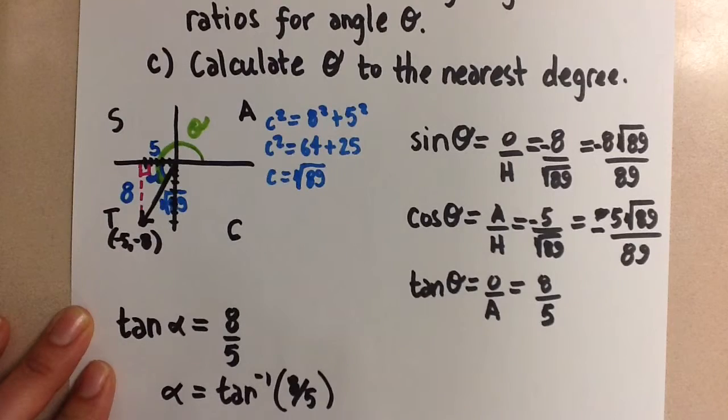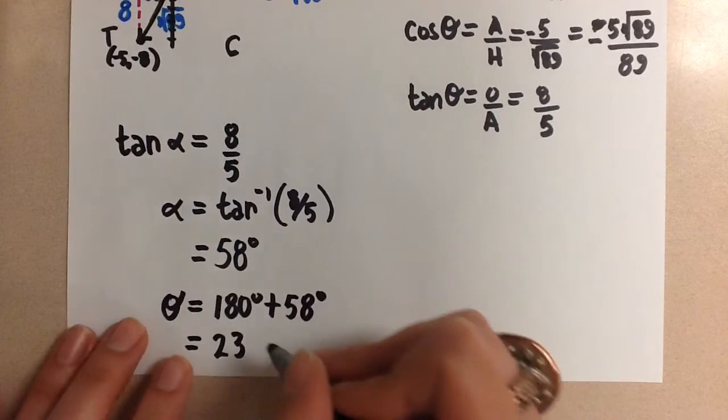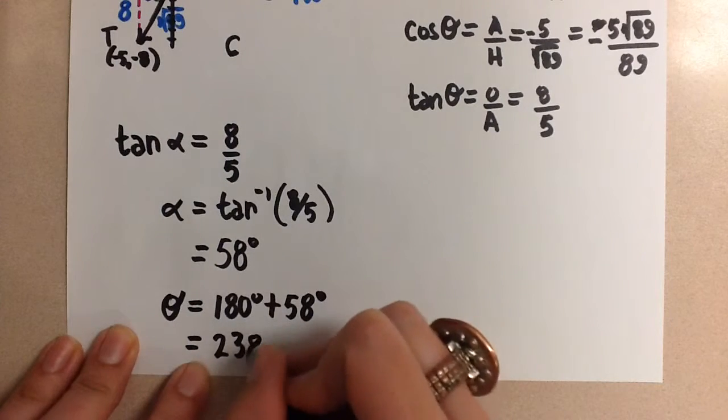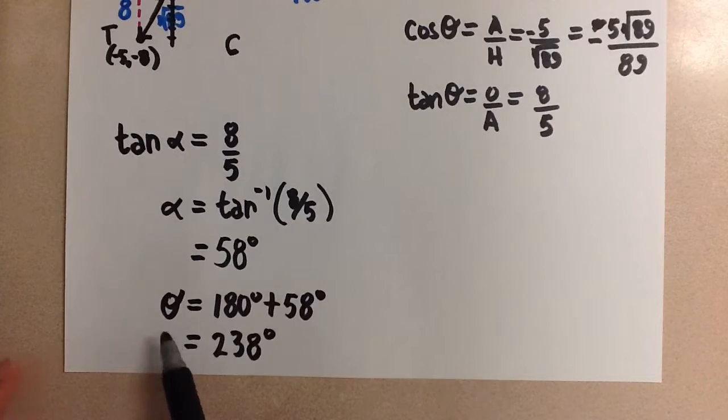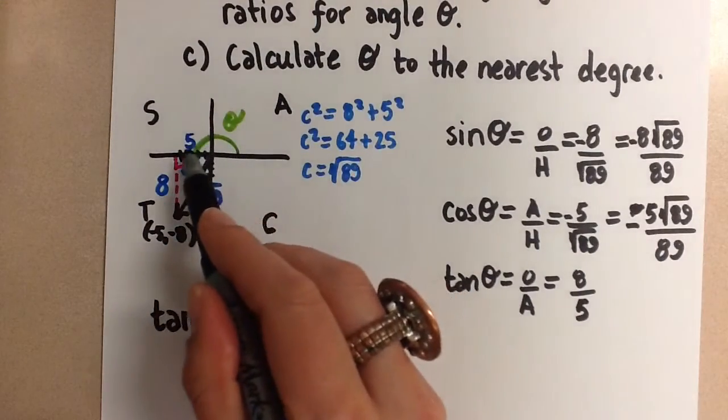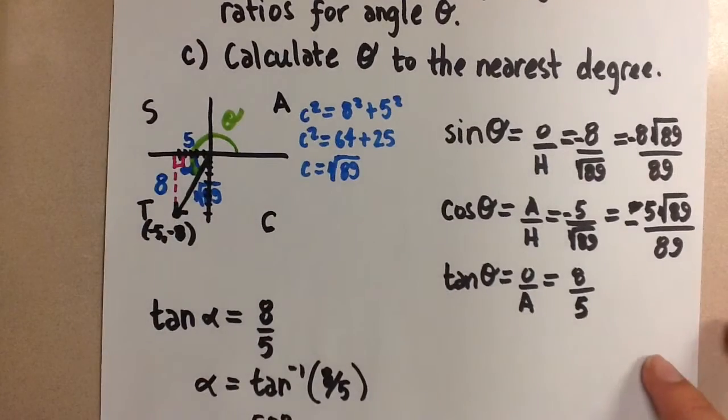And so we get 230, oh, sorry about that, 238 degrees as the value for angle theta that comes around here, which makes that terminal arm on our Cartesian plane.